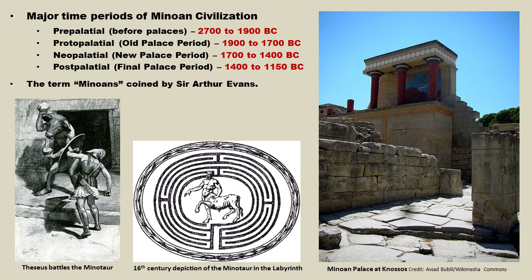In terms of Minoan civilization, there are four major time periods. These are divided up in terms of looking at architecture, and the reason for that is because there is no written history. So the kings are unnamed, the queens are unnamed, the wars are unnamed, and so we don't have any wars to establish a new period. We have to use architecture, and that means archaeology. We are completely reliant on archaeology to give us an idea of what the Minoans were all about.